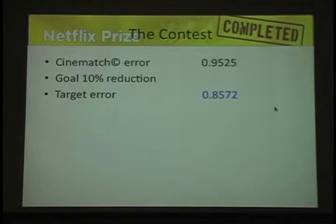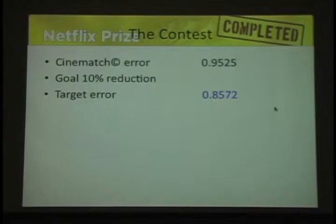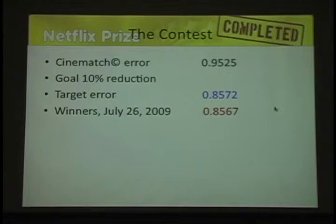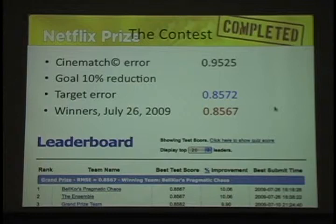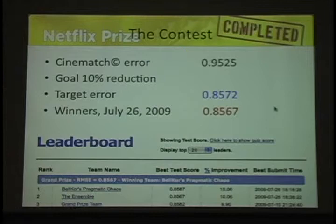The winners on July 26, 2009, got to 0.8567. This contest ran for three years — it took three years of analyzing this database to meet the 10% goal. Here's a snapshot from their leaderboard, updated regularly for all three years, showing who was winning and losing. Belcourt's Pragmatic Chaos won, with a root mean squared error of 8.567, a 10.06% improvement. The contest was over and they got their million dollars.